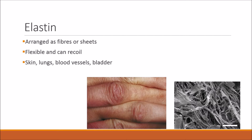The other main type of fibre is elastin. Elastin is arranged as fibres or sheets — it is flexible and it can recoil. You can mainly find it in the skin, lungs, blood vessels, and bladder. As a quick demonstration, if you pull on the wrinkly skin between your fingertips and knuckles — as seen in the picture — and let it go, you can see how it slowly recoils back to its original position. That ability to recoil back to its original shape is one of the main qualities of elastin.